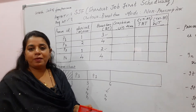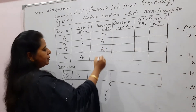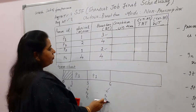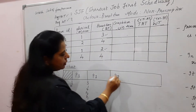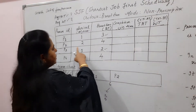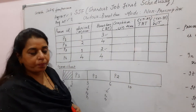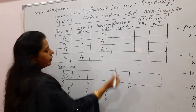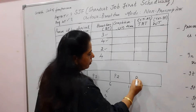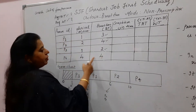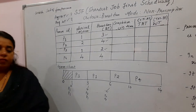We break this tie using FCFS scheduling. P2 arrived at time 2 and P4 arrived at time 4 — but P2 arrived first, so P2 gets its turn to execute. P2 requires 4 units, so it completes at time 10. The only remaining process is P4, which is the last to execute. P4 requires 4 units, completing at time 14.